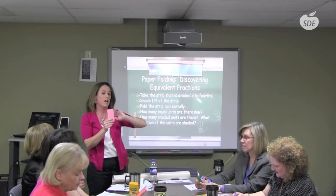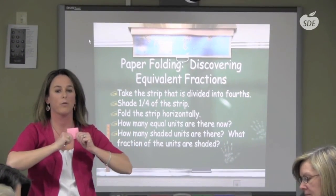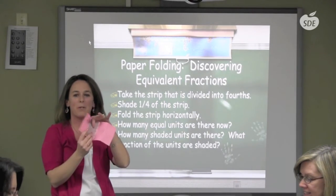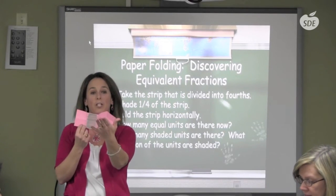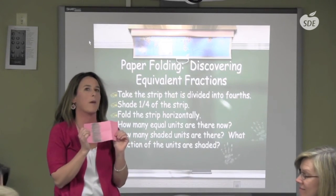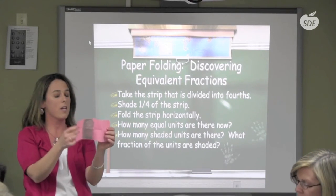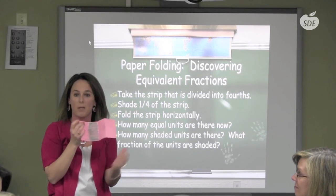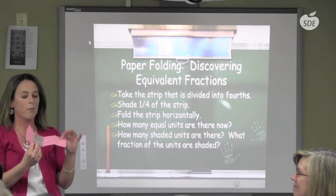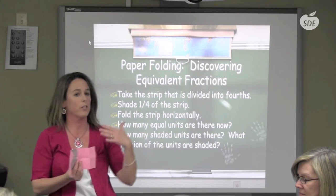Now fold it in half the other way and predict: how many sections will we have when we open it? When you open it, what do you notice? Two sections are now colored — but before we folded it we only had one colored section. This is a huge eye-opener, especially for students who struggle. Their eyes get big when they see this. We can now see why one fourth is the same as two eighths.